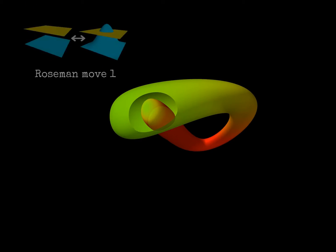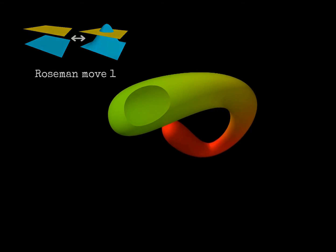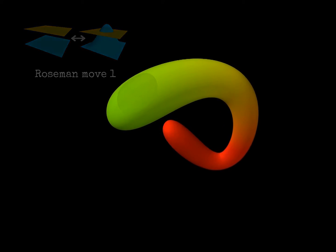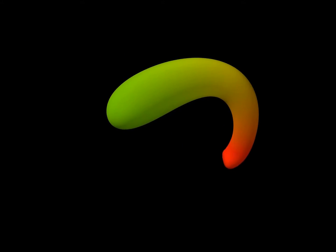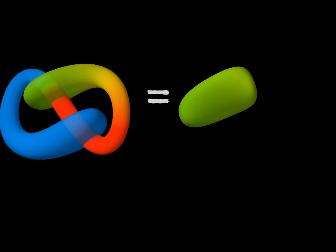Lastly, we use Rosemann move 1 yet another time. The sphere is now clearly unknotted.